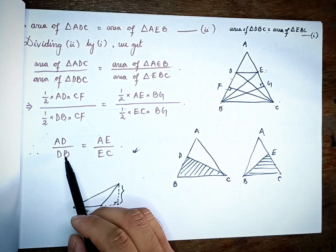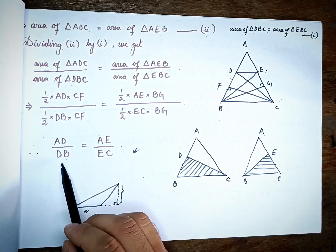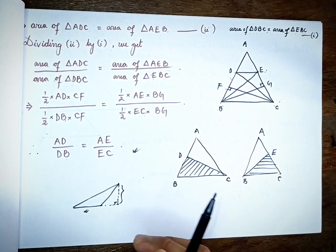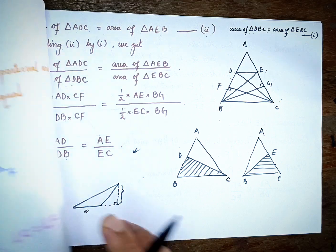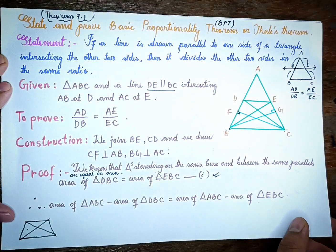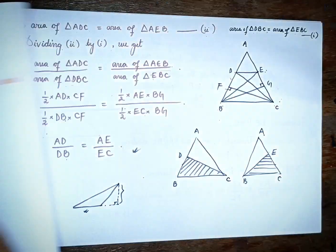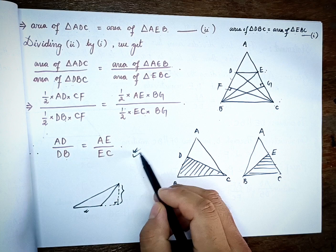So AD divided by DB equals AE divided by EC. This completes the proof of the Basic Proportionality Theorem.